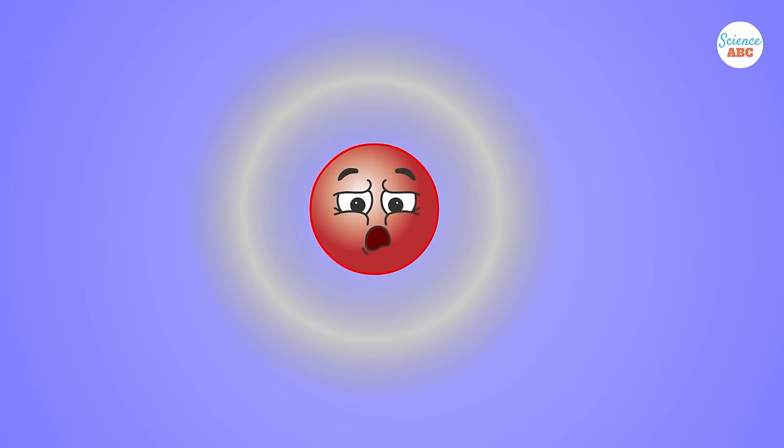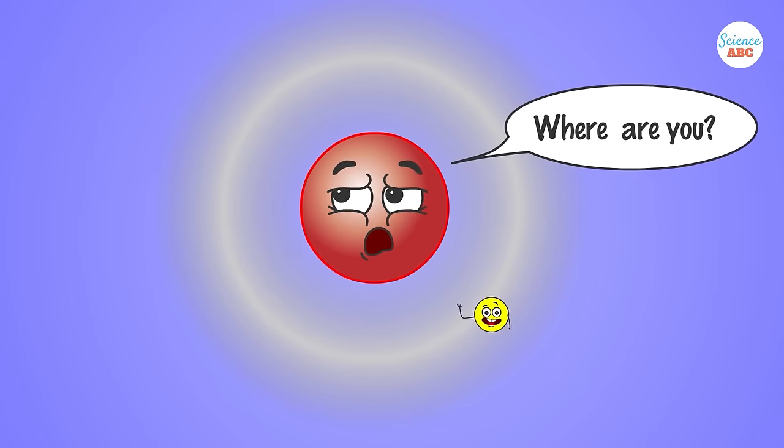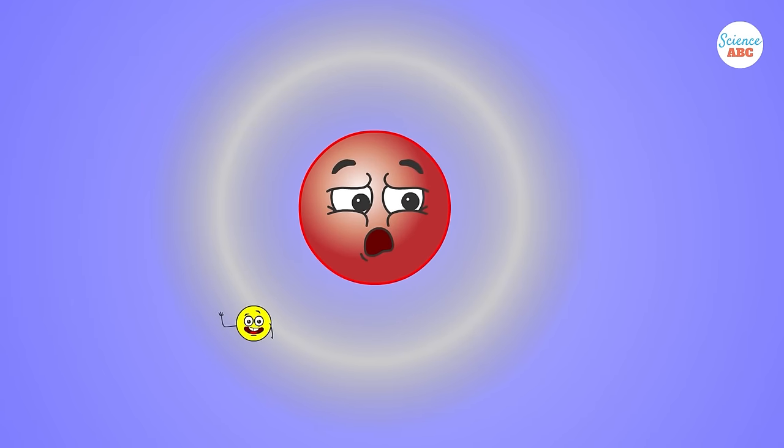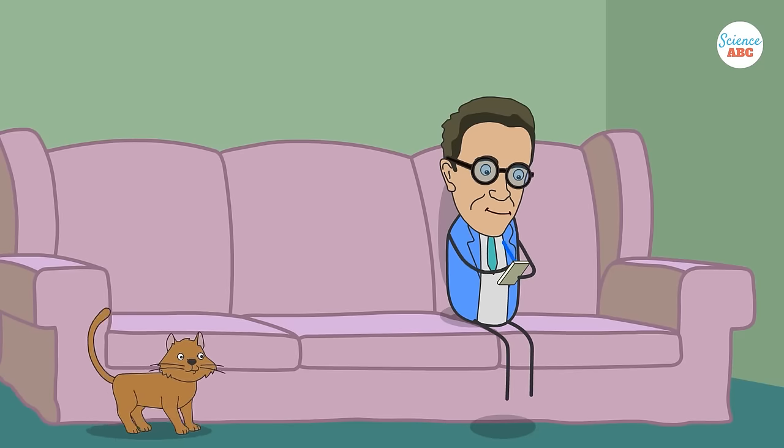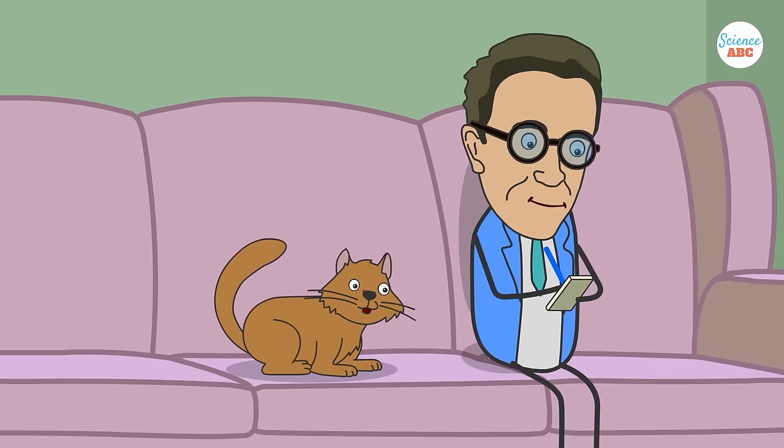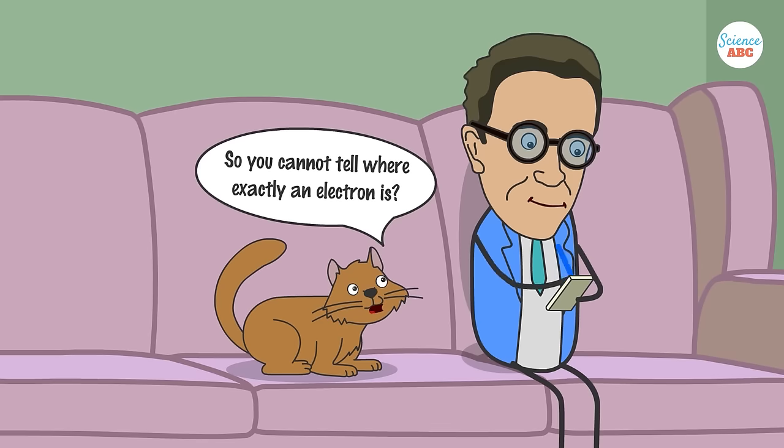Rather, electrons exist as electron clouds in an atomic orbital, a region inside the atom where the probability of finding an electron is the highest. He also formulated the Schrödinger wave equations, which would help us accurately calculate the energy levels of electrons in an atom.